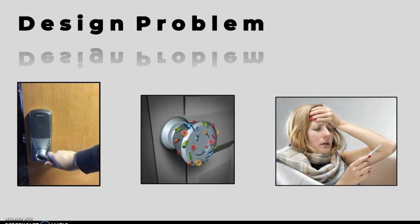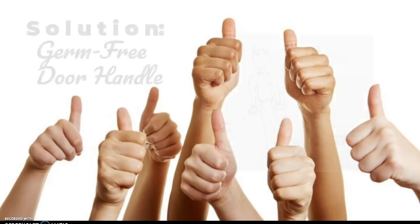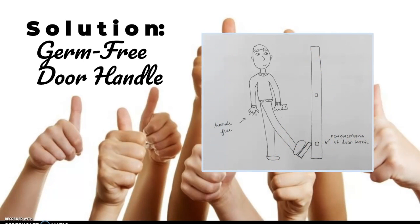The next discussion required us to find a faulty design in the world and come up with a solution for it. I chose to address the problem of doorknobs facilitating the spread of germs. The design of the doorknob requires that you touch it and thus contract germs from previous individuals. My solution is a hands-free doorknob — the door can instead be opened by foot, decreasing the spread of germs and, as an added bonus, allowing you to open a door while your hands are full. This design will prevent the spread of illness and make life easier with its convenience.